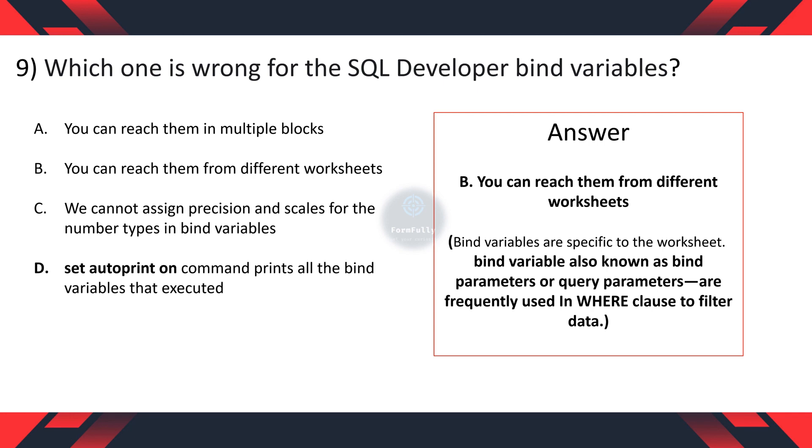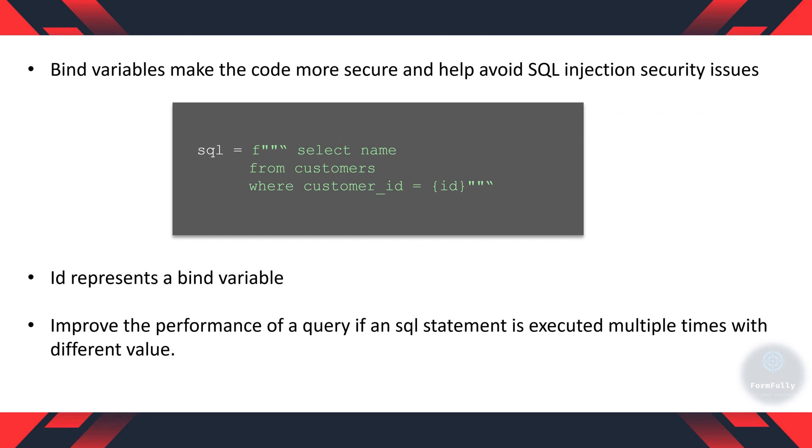Bind variables, also known as bind parameters or query parameters, are frequently used in where clause to filter the data. The bind variables make the code more secure and help avoid SQL injection security issues. In the given example, you can see we are selecting name from table customers where customer id equals to id. Here, id represents a bind variable which can act as a parameter value that you can refer anywhere in the code as you need. Using bind variables in queries, it improves the performance of query if an SQL statement is executed multiple times with different values.